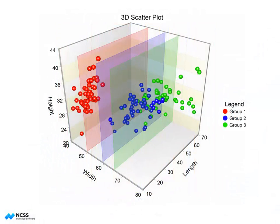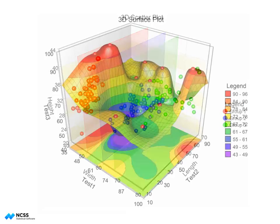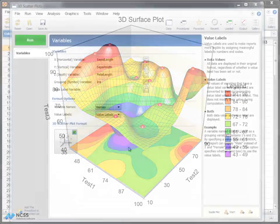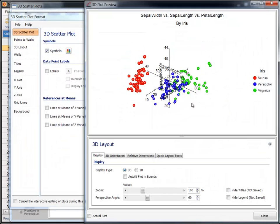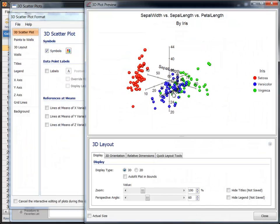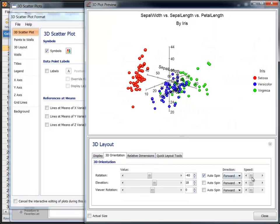3D scatter plots and 3D surface plots are now available. New spatial visualization tools make it easy to explore these graphs in three dimensions with interactive and automatic chart rotation.